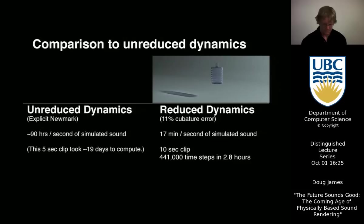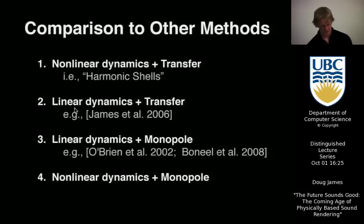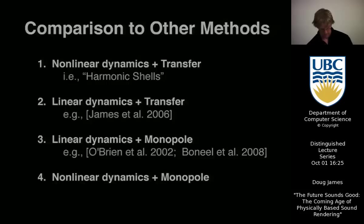Here's an illustration of the error of using the cubature scheme. One major benefit is you can take large time steps in the subspace model, but you can still see the effect of the error. Here's the same example I showed you earlier with the unreduced case where we took 19 days versus 3 hours. We compared to other methods: nonlinear subspace dynamics with the FAT map transfer — the harmonic shells approach — versus previous linear vibration models with transfer, versus linear dynamics with a simpler monopole sound transfer model, and finally nonlinear dynamics with a simple radiation model. The last is the most popular type of method used in games or other applications.